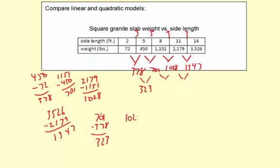And then 1028 minus 701. We got 327. And then let's try 1347 minus 1028. We got 319 here.